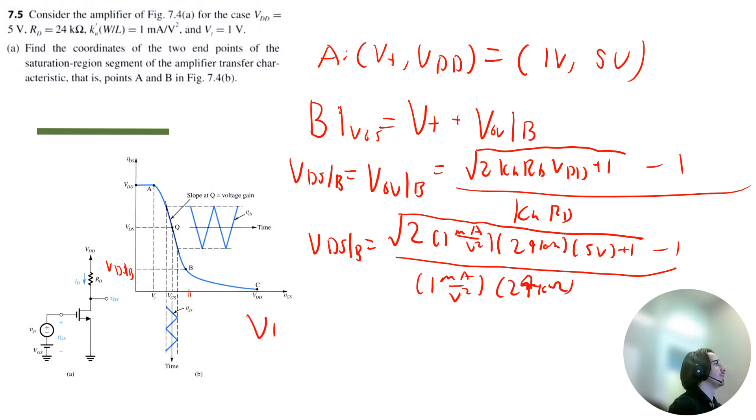So I get that VDS at point B is equal to 0.61 volts. That is the Y coordinate. The X coordinate, VGS, is threshold voltage plus V overdrive. So that's 1 volt plus 0.61, so that's equal to 1.61 volts. So B has the coordinates of 1.61 volts and 0.61 volts. So those are the coordinates for A and B.